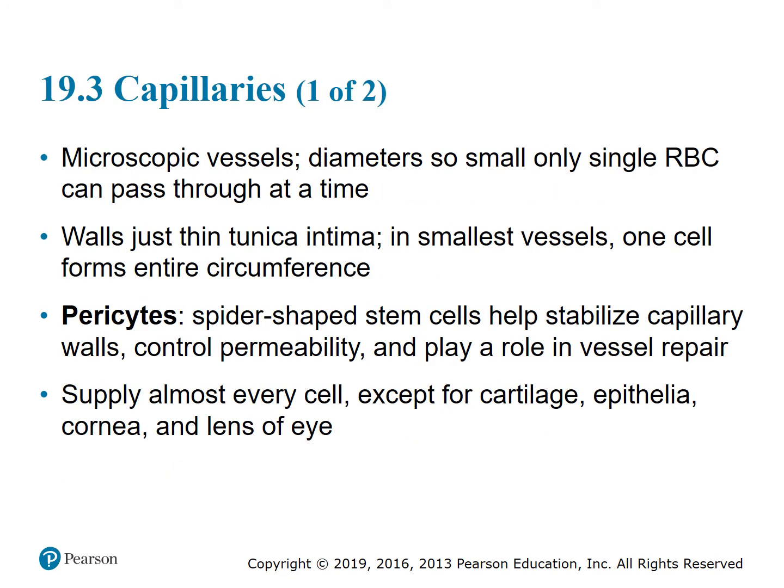Section 19.3: Capillaries. These are microscopic vessels with diameters so small that only a single red blood cell can pass through at a time. The walls consist of thin tunica intima only, and in the smallest vessels, one cell forms the entire circumference. Pericytes are spider-shaped stem cells that stabilize capillary walls, control permeability, and play a role in vessel repair. Capillaries supply almost every cell except cartilage, epithelia, cornea, and the lens of the eye.